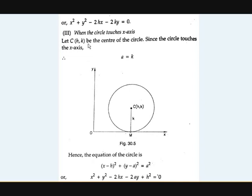The second special case: what is the equation of a circle if the circle touches the x-axis? If the circle touches the x-axis, the distance between C and the point of tangency M will be k, because the y-coordinate is k. The distance between the origin and the y-coordinate equals the distance between C and M, since they are parallel and form a rectangle. Therefore a equals k.